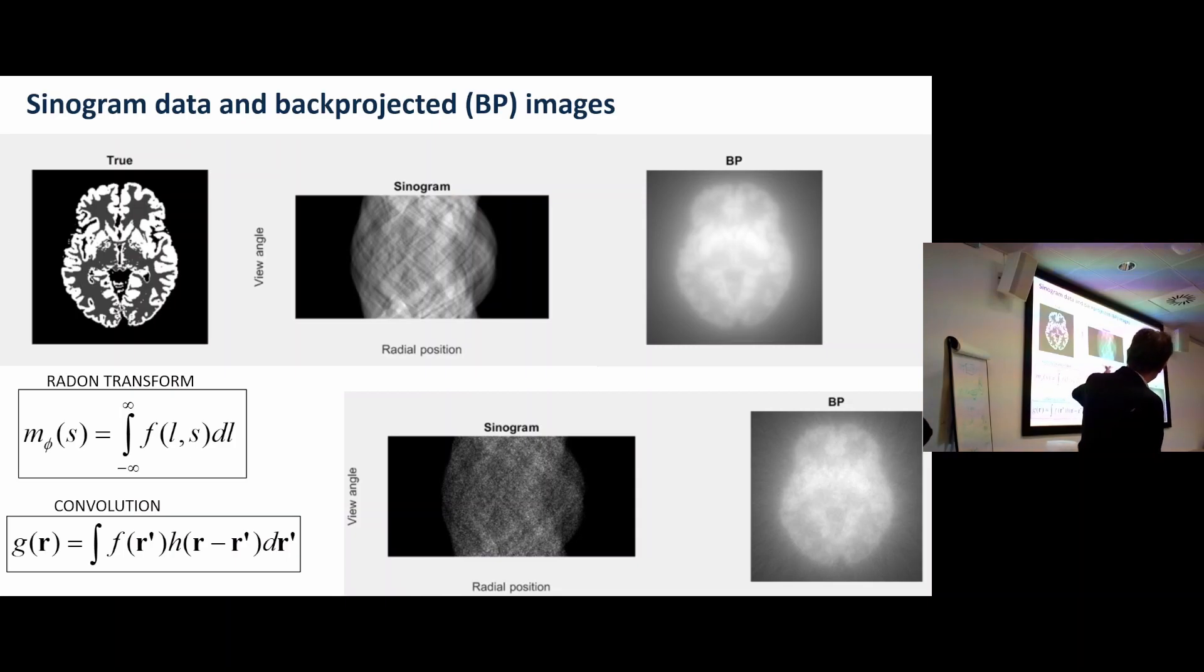In reality we have limited counts in our sinogram, so what I did there was I just did a Poisson sample of that, or you can do more accurately what I showed you in the last lecture which was point by point back to back photon pairs in PET, collecting them in the sinogram domain and back projected them.